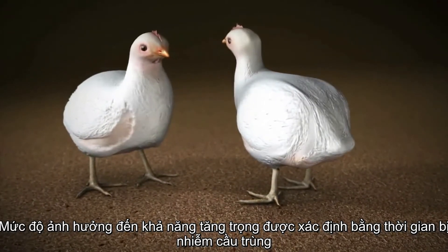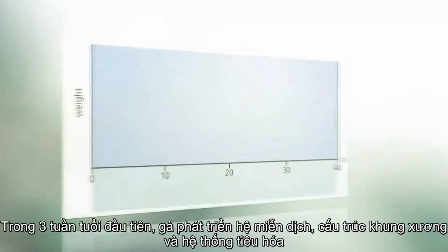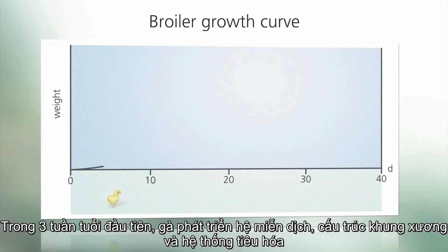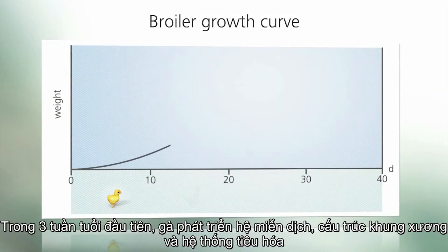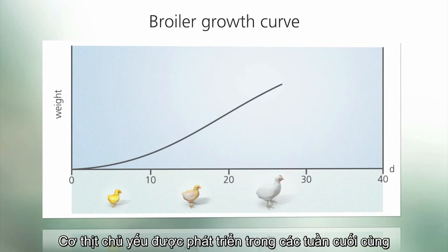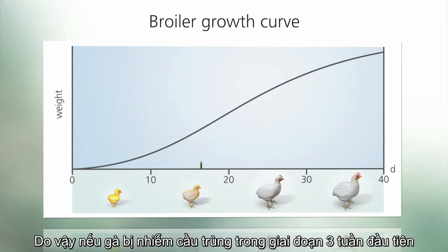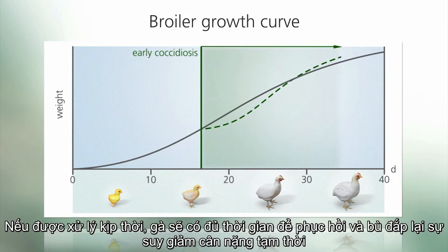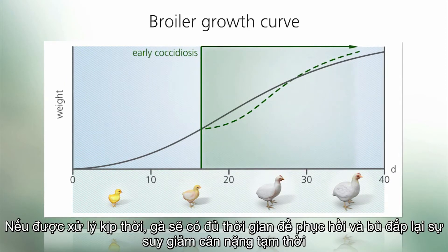During the first three weeks of a broiler's life, the immune system, the skeletal structure, and the intestinal system develop. The growth of muscle mass happens mainly in the final weeks. So an early infection occurs during a slower growth period when the impact on weight loss is small, allowing the bird time to recover and compensate for the minor transitory reduction in weight.